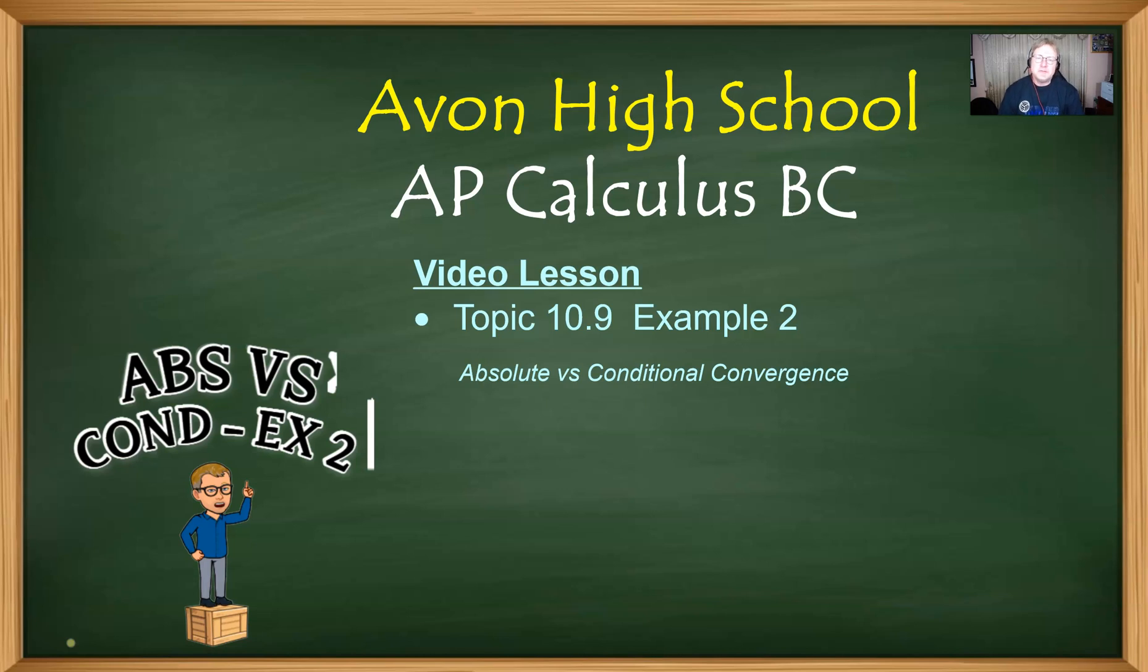Welcome back BC students to video number two over topic 10.9 talking about the difference between alternating series abilities to be conditionally convergent or possibly absolutely convergent or we always have the possibility that they diverge as well. So really there are three different possibilities that we deal with.